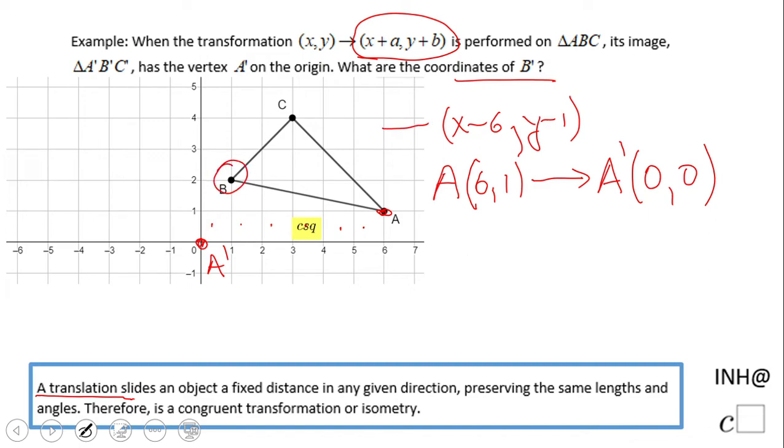We're going to use this rule to find B prime. Point B is (1,2), and now we're going to get B prime by subtracting six. One minus six is negative five, and two minus one is one.